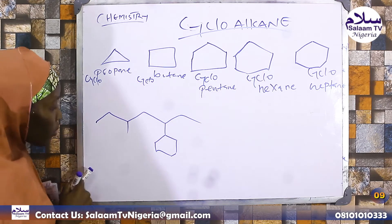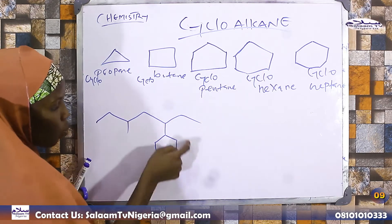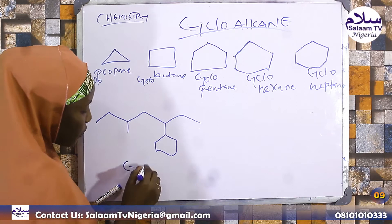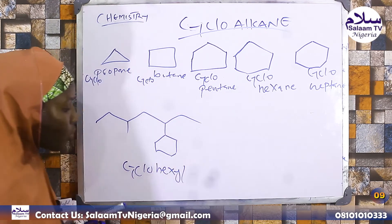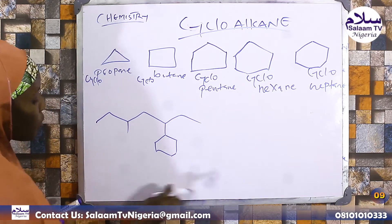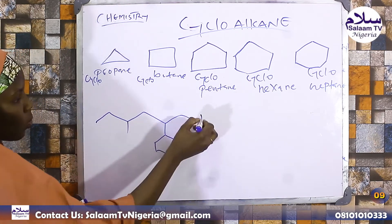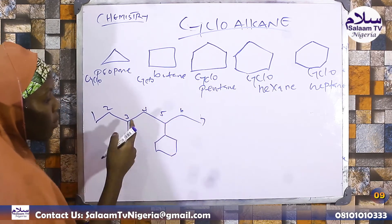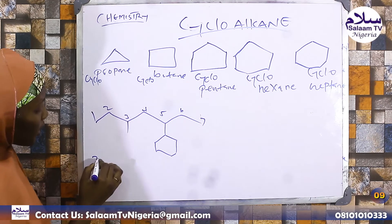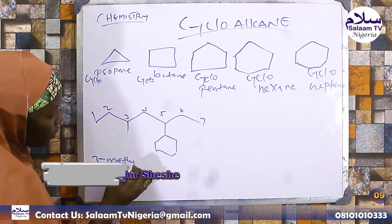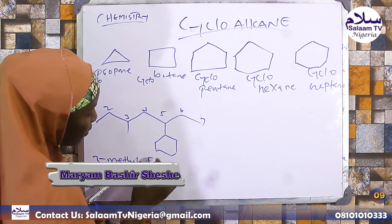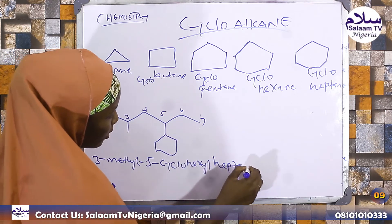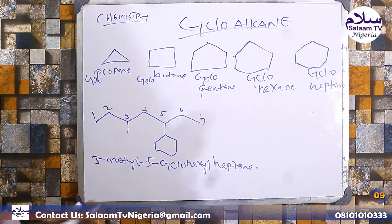One substituent is methyl, and one is cyclohexyl. If we have a cyclohexyl substituent, then counting one, two, three, four, five, six, seven — therefore the name would be 3-methyl-5-cyclohexylheptane. Those are the examples.